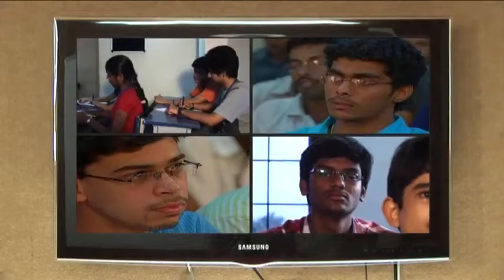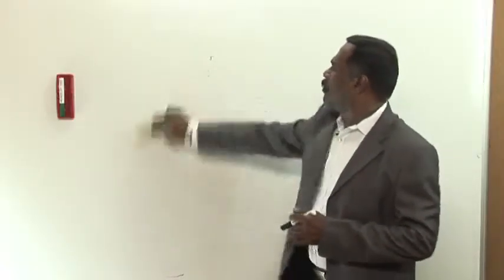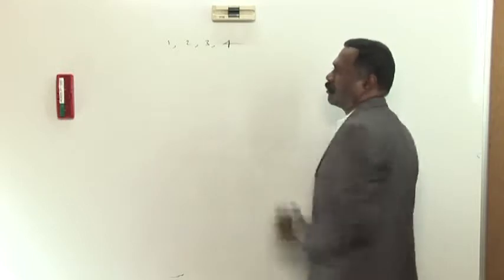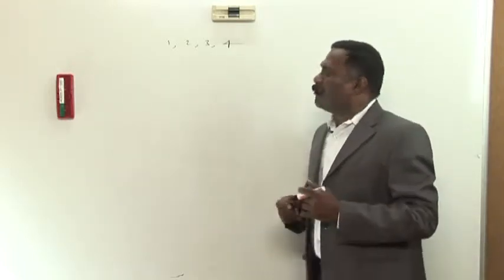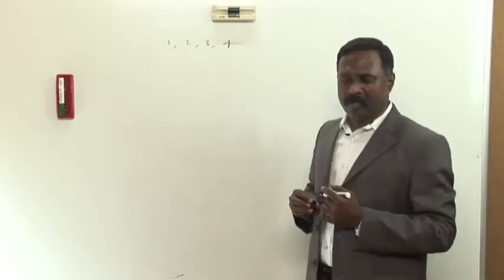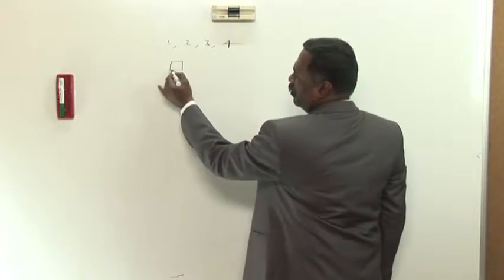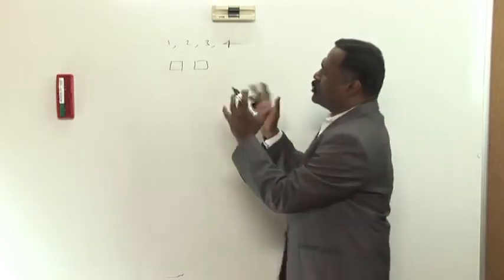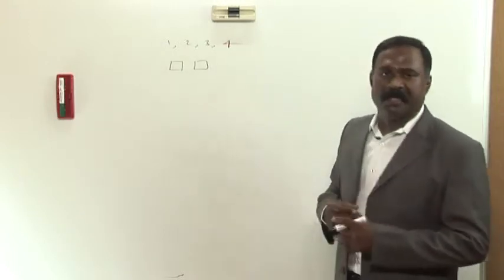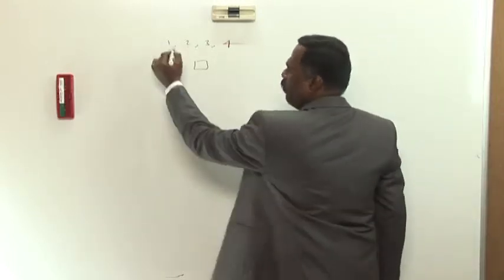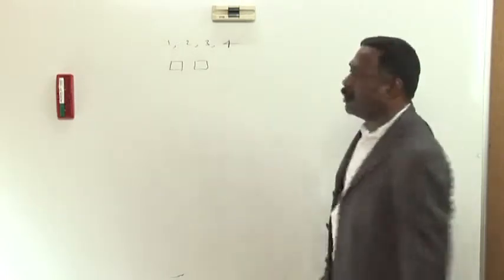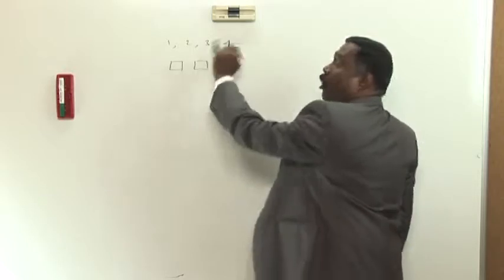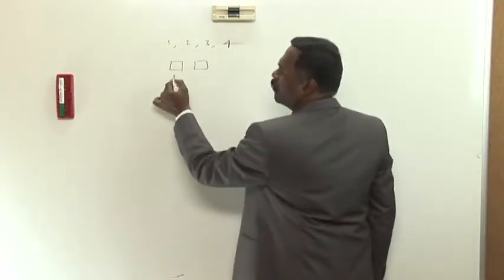Now we will apply this to mathematics. Let us take the digits 1, 2, 3, 4 as given to us. We want to form two-digit numbers using these four digits. A two-digit number contains two places: this is the ones place and this is the tens place. I want to know how many two-digit numbers can be formed from these four digits. I want to fill these blank places with the given digits 1, 2, 3, 4. The first blank place can be filled with either 1, 2, 3, or 4, so it can be performed in four different ways.